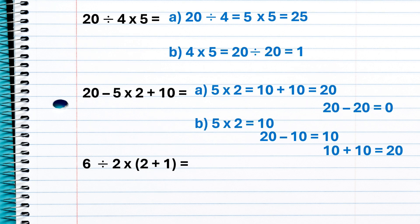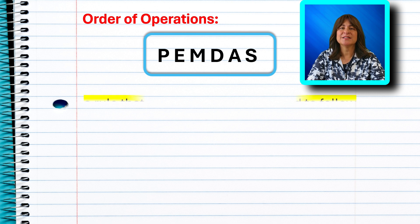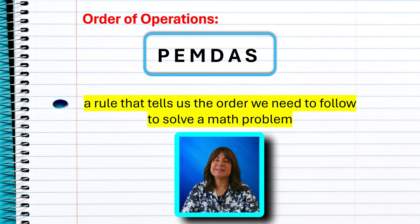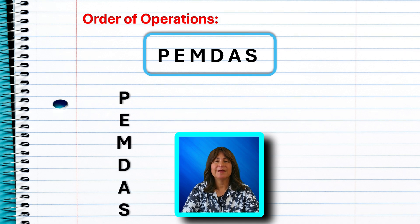So before we look at the third problem, the one that went viral, let's talk about the order of operations in math, otherwise known as PEMDAS, a rule that tells us the order we need to follow to solve a math problem. That should clarify things, right? If we have a rule like PEMDAS to follow?